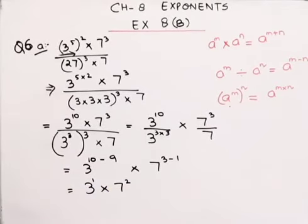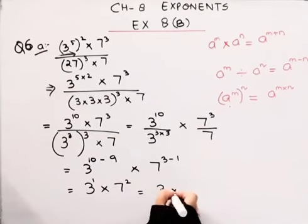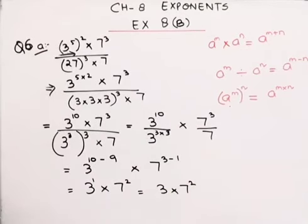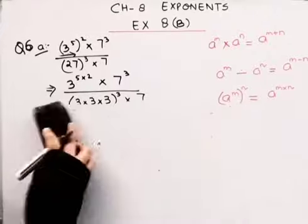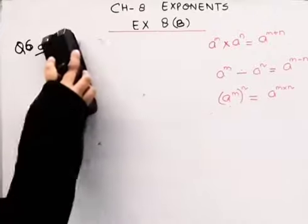So the answer will be 3 times 7 to the power 2. Clear? Here we complete part a, now we'll move on to the b part. Okay.